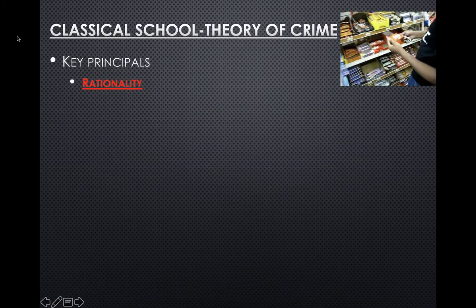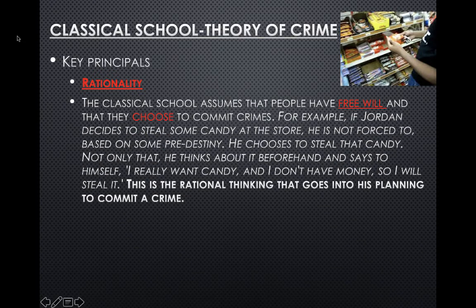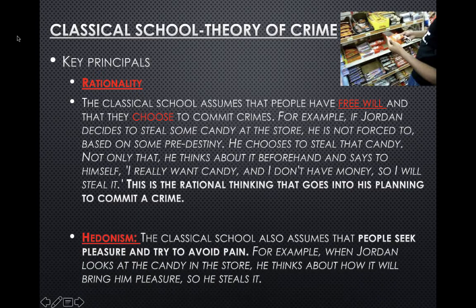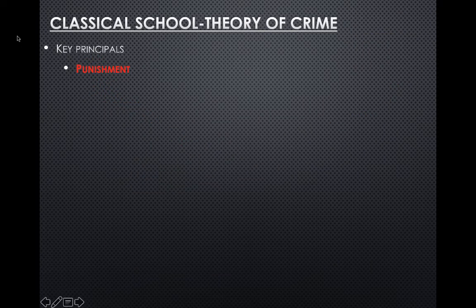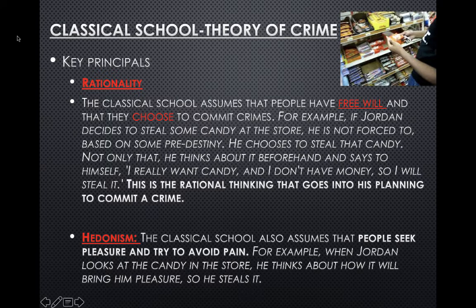Continuing on to the classical school theory of crime — key principles to remember for the quiz. Rationality: the classical school assumes people have free will and choose to commit crime. For example, Jordan decides to steal candy at the store — he thinks 'I really want the candy, I don't have money, so I'm going to steal it.' That's rational thinking and planning. There's also hedonism: the classical school assumes people seek pleasure and try to avoid pain. Jordan thinks about how the candy will bring him pleasure, so he steals it.